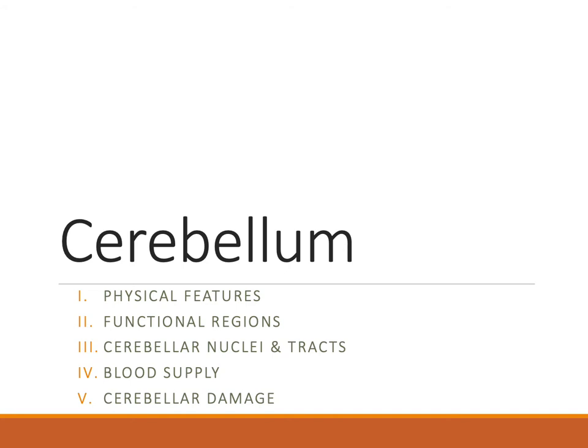Today we'll be talking about five main topics on the cerebellum: first, its physical features; the functional regions; its cerebellar nuclei and the tracts associated with them; its blood supply; and what happens if it gets damaged.